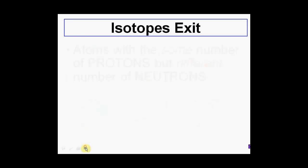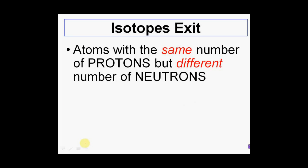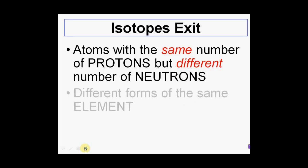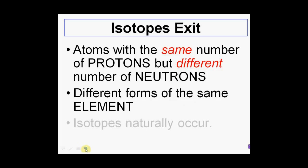Let's recap once again: we're talking about atoms with the same number of protons but a varying or different number of neutrons — different forms of the same element, as I hope you've seen throughout. And lastly, these all occur naturally. Hope this sticks with you guys — enjoy!